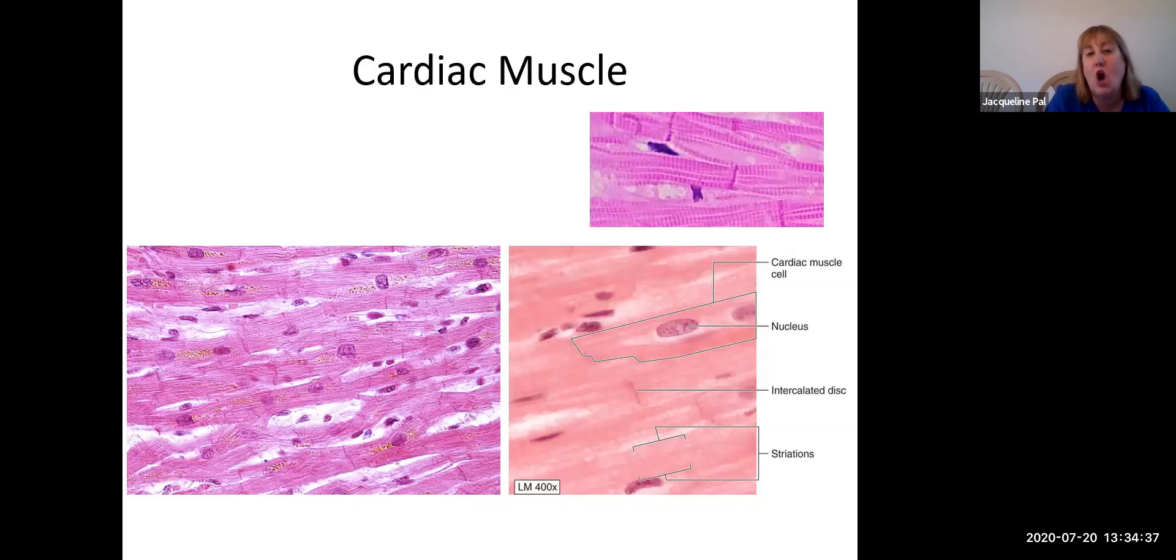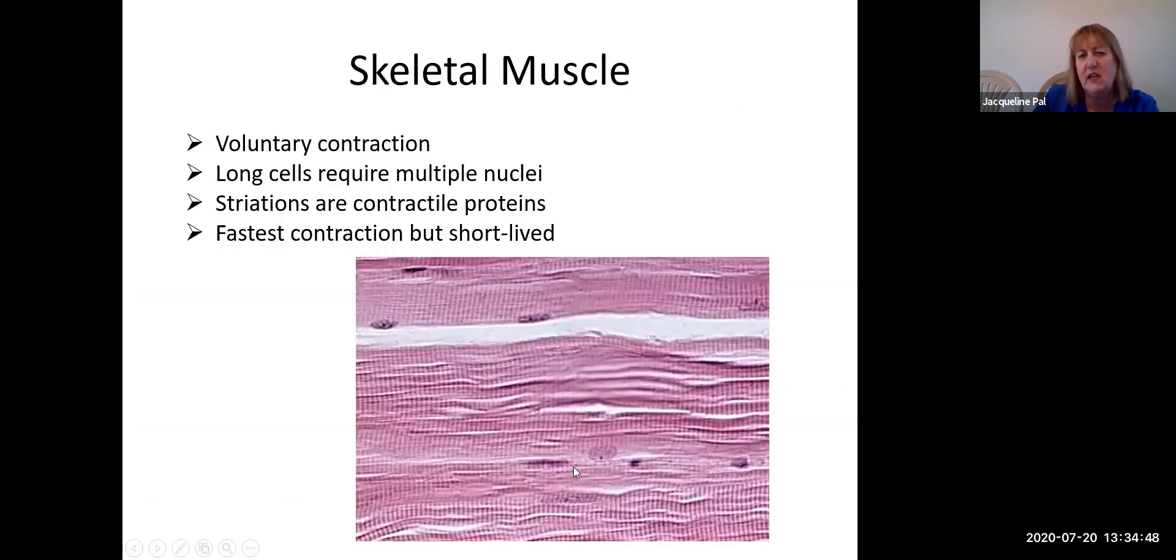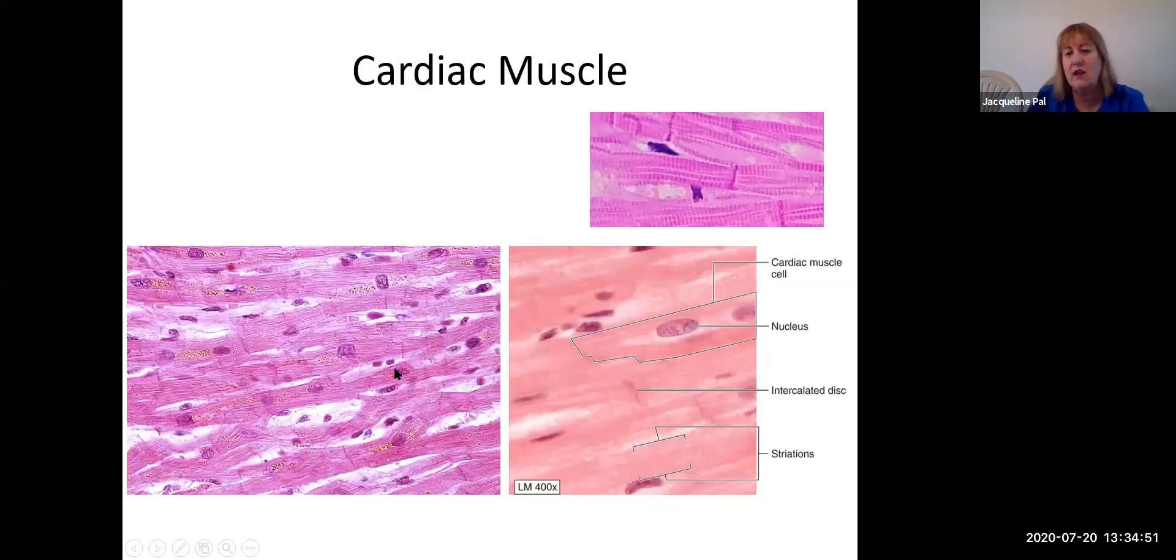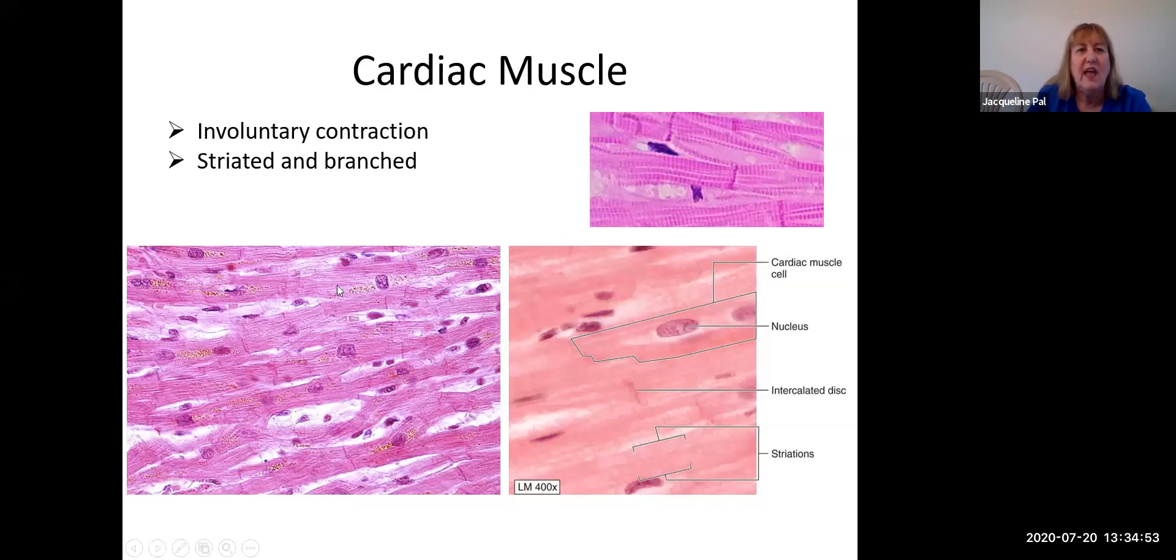The next type is cardiac muscle. Cardiac muscle, when you look at it, do you see how it's long as well? But you're going, wait a second. I see spaces here that I didn't see here. And that's because cardiac muscle has branches. You can see that this cell has branches, but it's striated. Do you see the stripes? You can see the stripes here now that I pointed them out to you as well, but you can clearly see the stripes here.